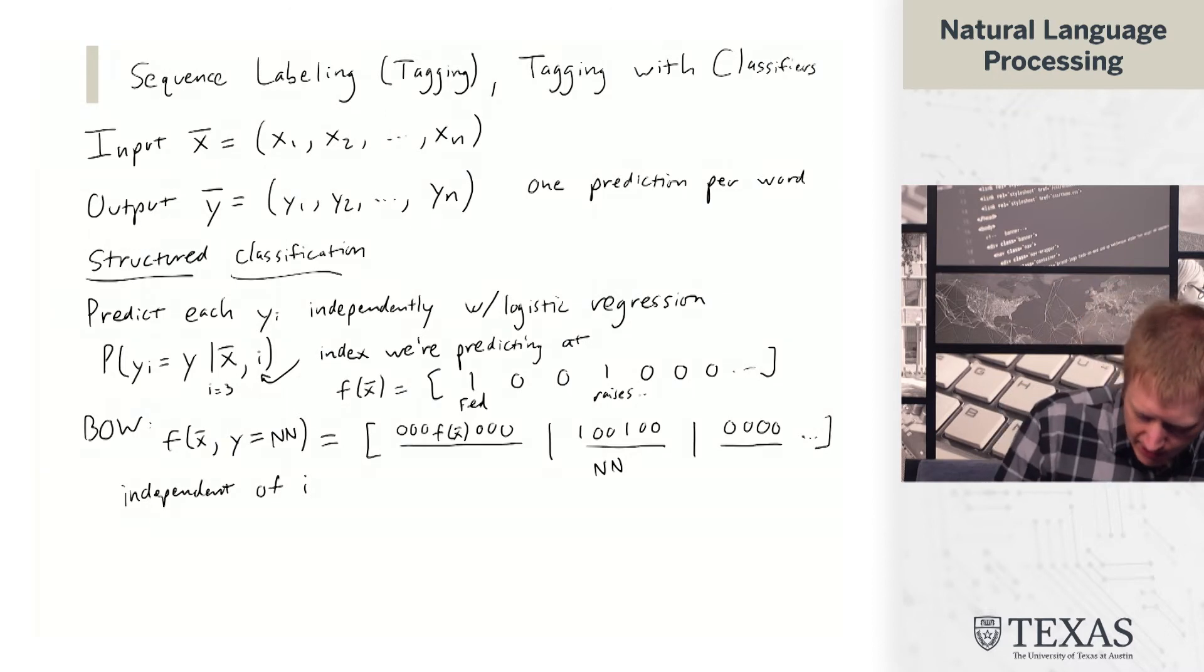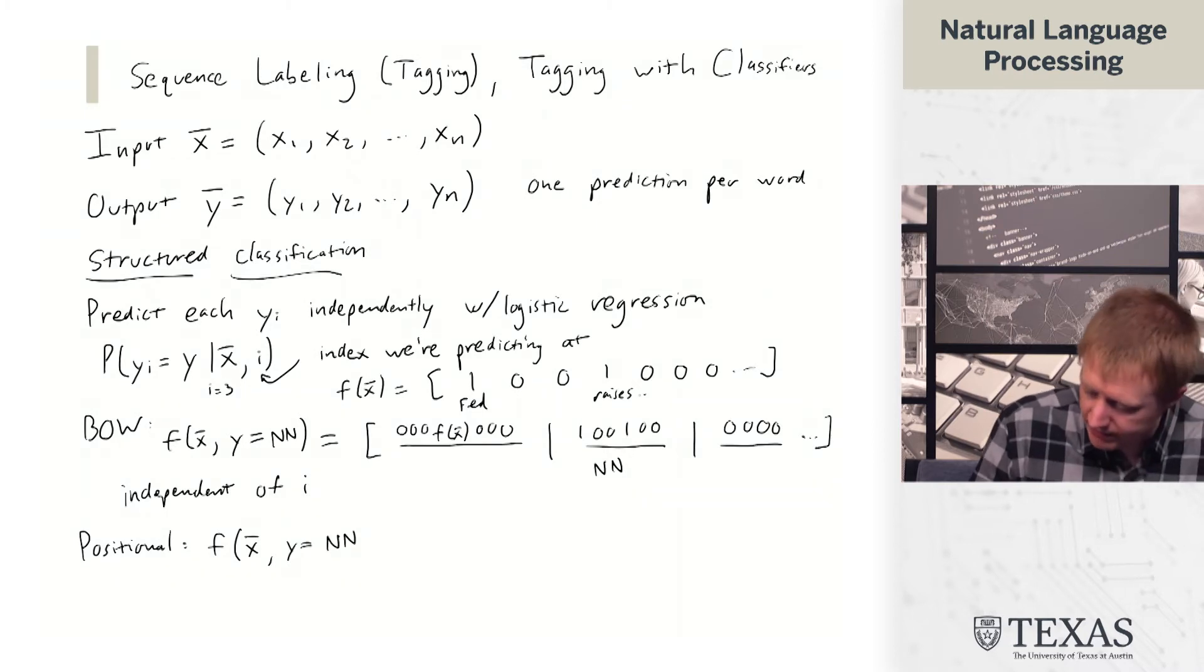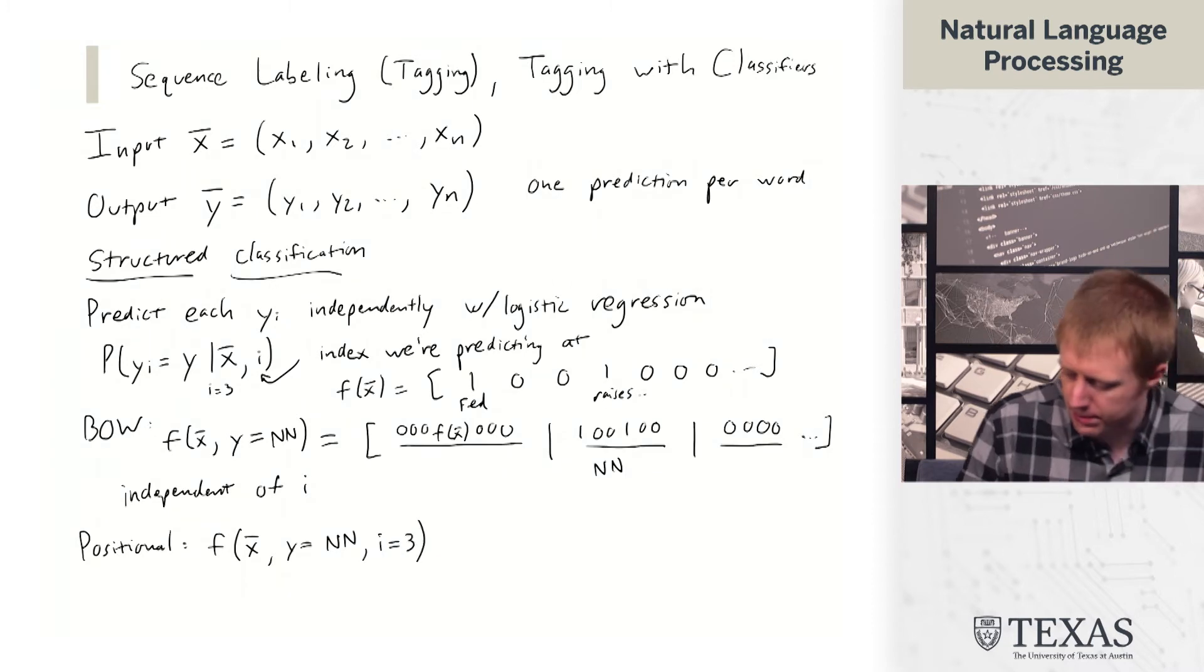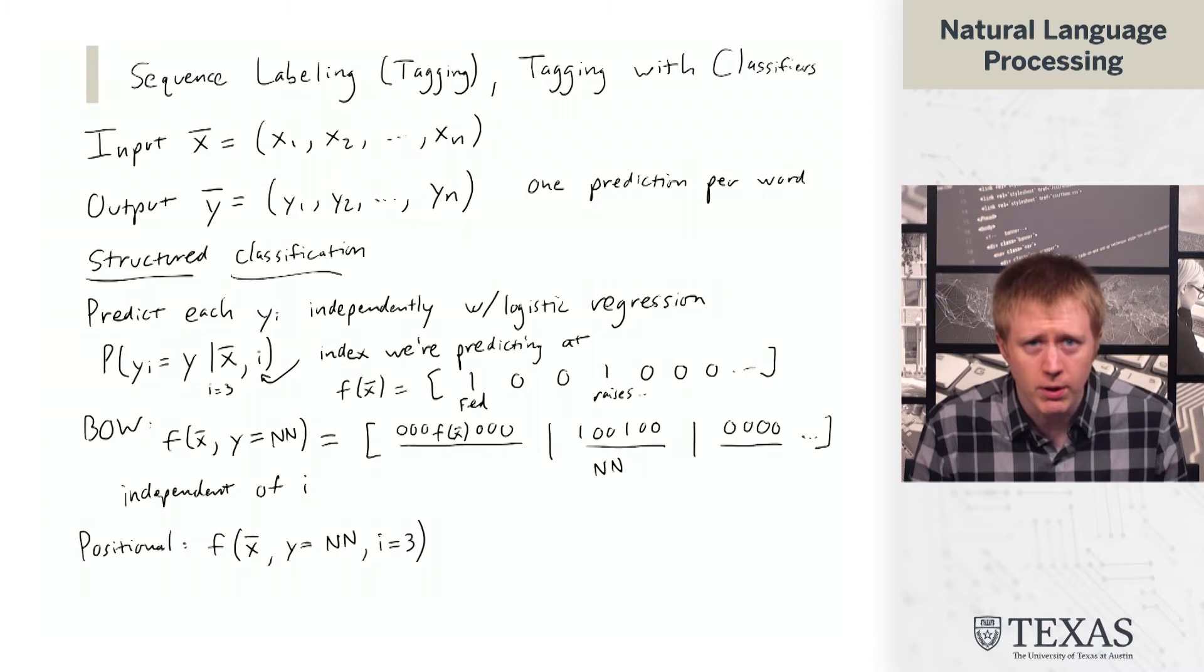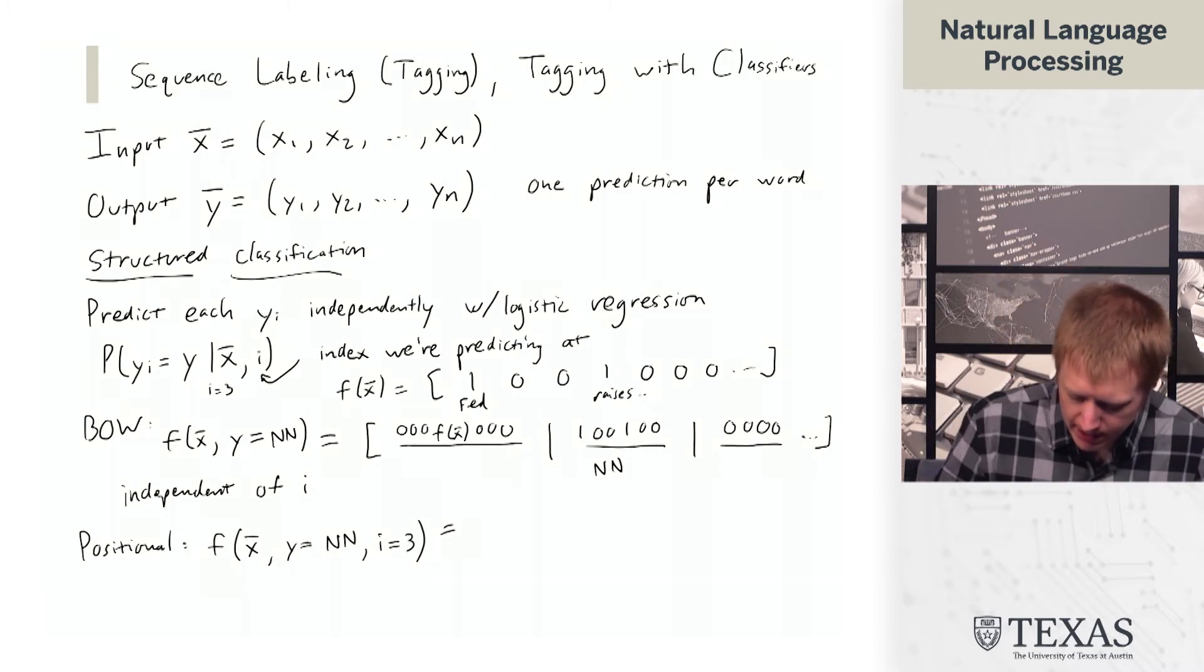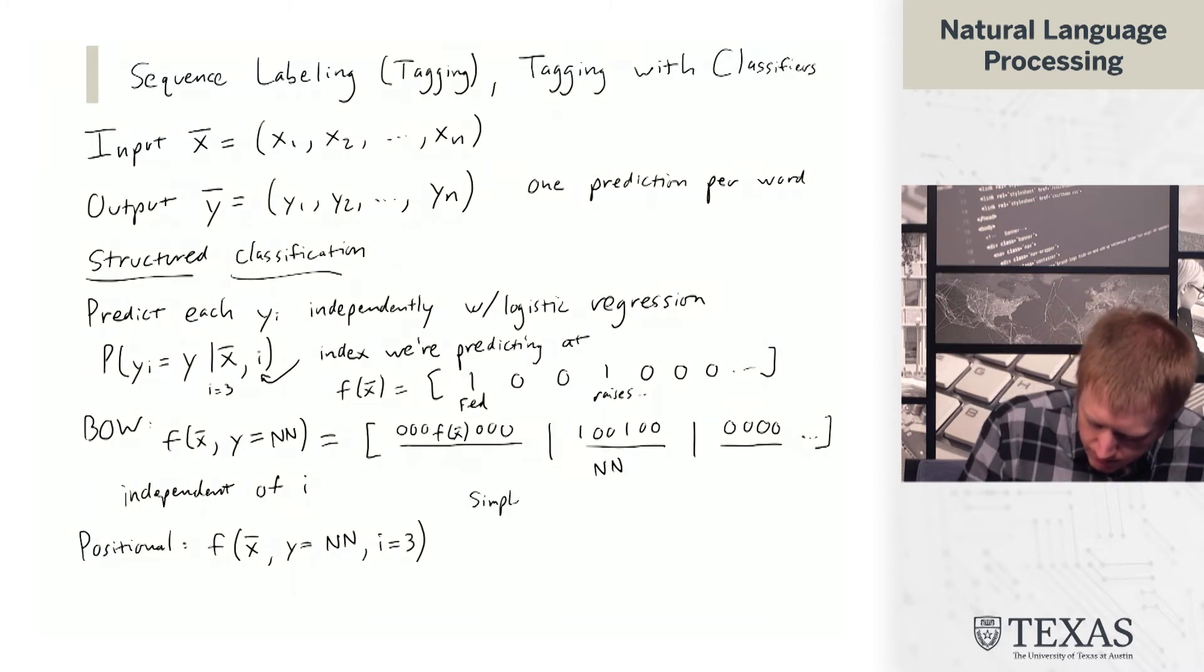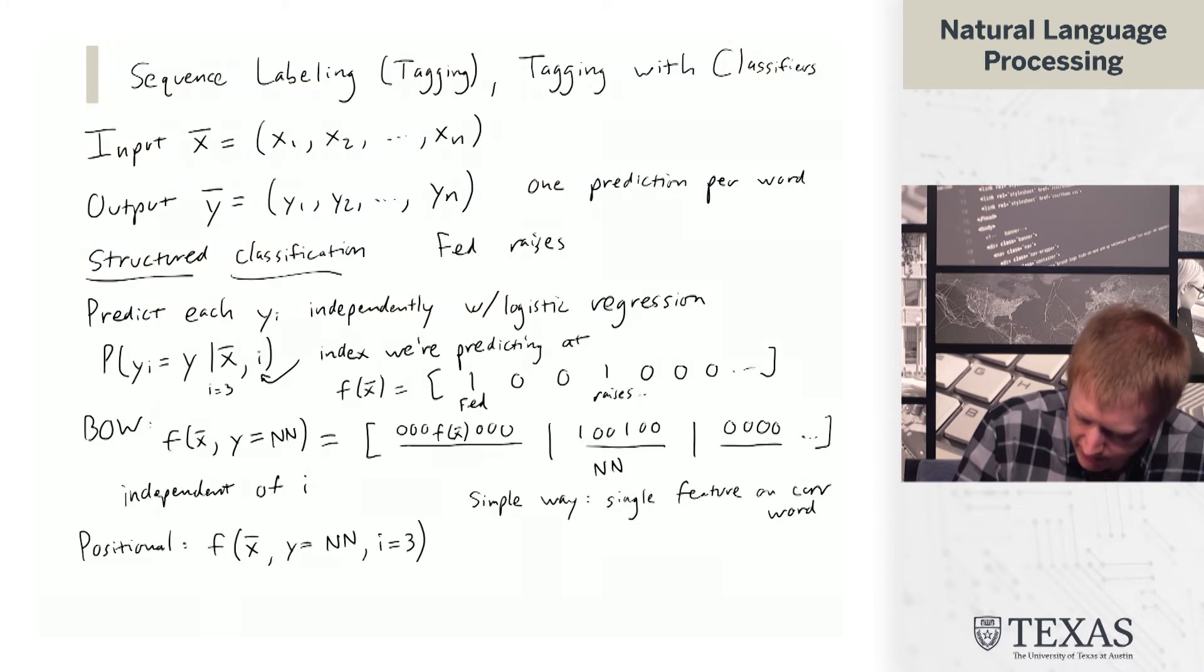Instead, what we need is a kind of positional view of our features. We need to look at x. We need to look at the fact that the label that we're thinking about is nn. And we need to think about the position. So one way to do this, one very simple way, is to just have a single feature on the current word. Here, let me write the example up here. Fed raises interest rates 0.5 percent.